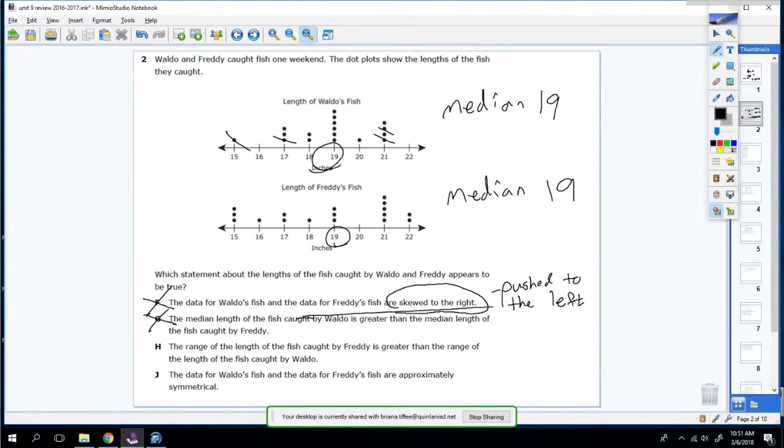Next one says the range for Freddy is greater than the range for Waldo. So this is the range. Range will be 21 minus 15, which equals six. And this is the range for Freddy, which will be 22 minus 15, which is seven. So be fairly careful on this one because it switches around. This time it puts Freddy first. And it says Freddy's range is greater than Waldo's range. That is true.